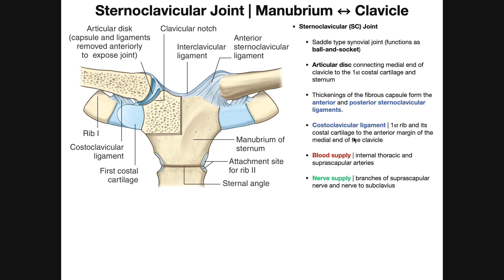There's another ligament that doesn't directly stabilize the SC joint but attaches to it via the joint capsule, and it plays a role in connecting the two clavicles to one another — that's called the interclavicular ligament. It originates on the superior aspect of one clavicle, runs over the joint capsule, traverses over the jugular notch of the manubrium, and then runs up the other joint capsule to reach the other clavicle.